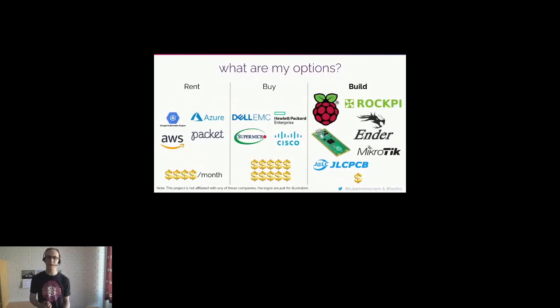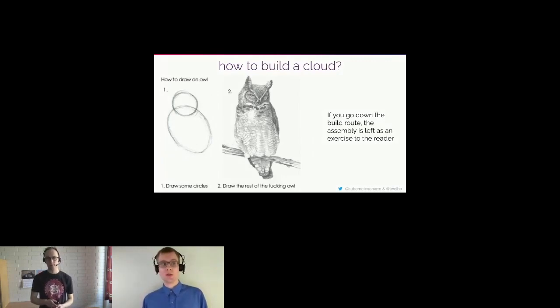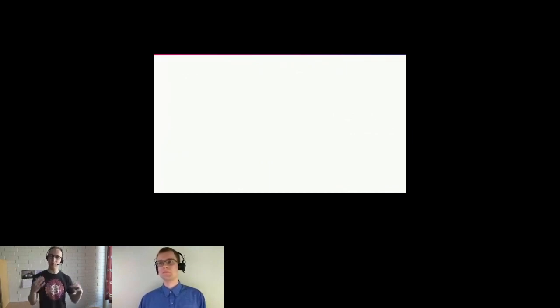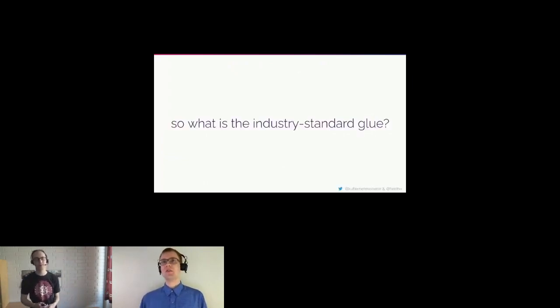We can build our own cloud from commodity components — for example, Raspberry Pi and other things listed here — which is much cheaper and much more accessible. The next question is: how do you build a cloud? It's a large undertaking. You need to bind together many hardware and software components, and there's simply no end-to-end manual. Here is the infamous cloud-native landscape, where all the components you'd need to integrate are listed — and it's just overwhelming. You really need some good glue to bind all of these things together.